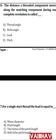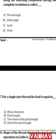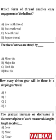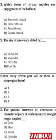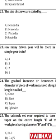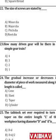Question 21: Which form of thread enables easy engagement of the half nut? The answer is acme threads — used on lathe machines for the half-nut mechanism. Question 22: The size of screws are stated by — the answer is major diameter.